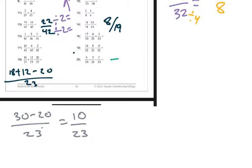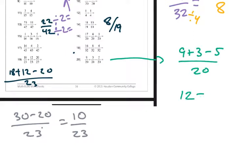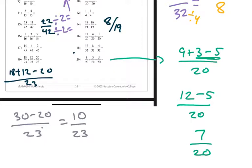Number twenty: nine plus three minus five over twenty. Nine plus three is twelve, twelve minus five is seven, so we're left with seven over twenty. One thing you can also do is if you prefer, do three minus five first - that is negative two - and nine minus two is seven. The order is up to you. If that's confusing, don't worry, just keep reading it left to right and you'll be fine.